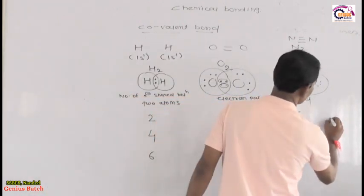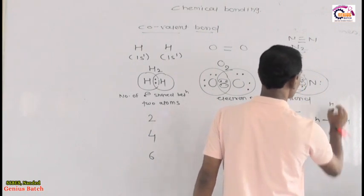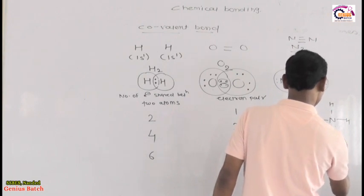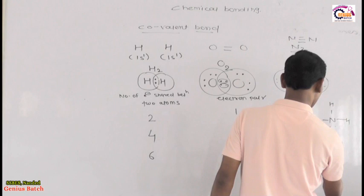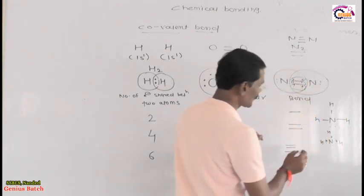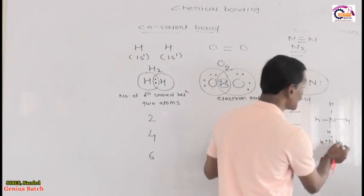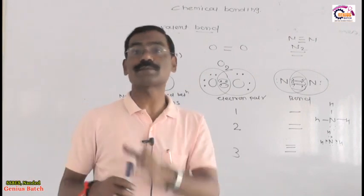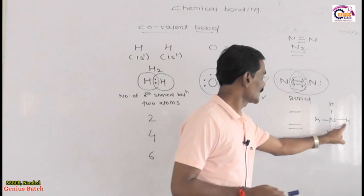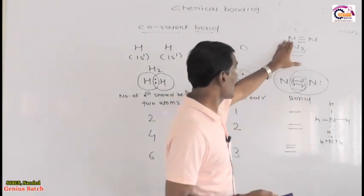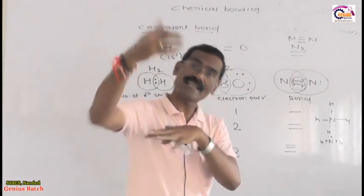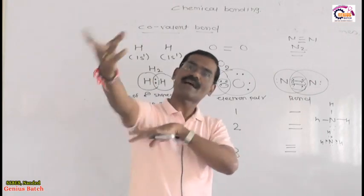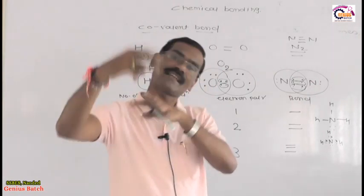Consider ammonia: nitrogen shares electrons with three hydrogen atoms, forming 3 sigma bonds — one with each hydrogen. If nitrogen shares 3 electrons with 3 different atoms, 3 single (sigma) bonds are made. This differs from sharing 3 electrons with a single atom, which would form a triple bond. So 3 electrons shared with 3 different atoms gives 3 sigma bonds.